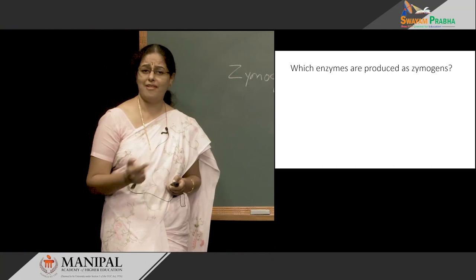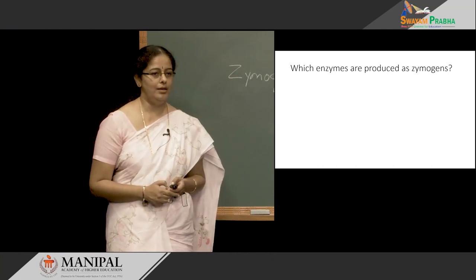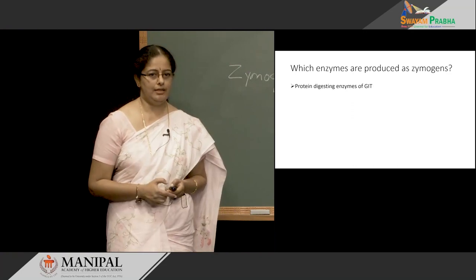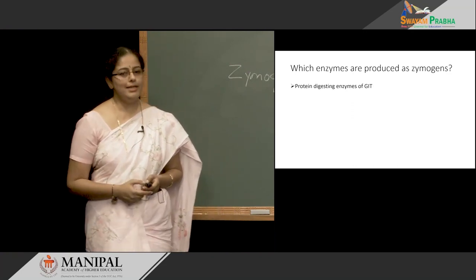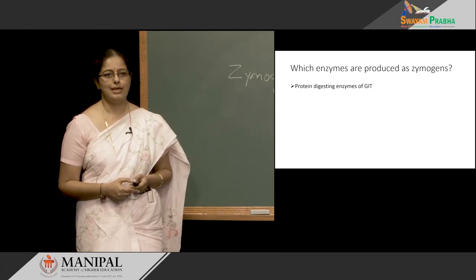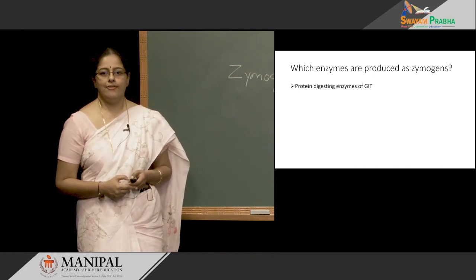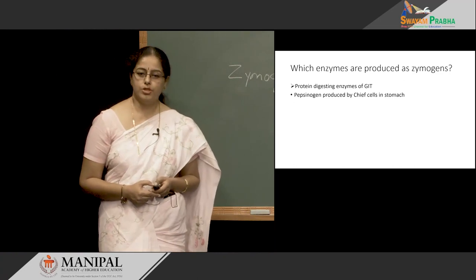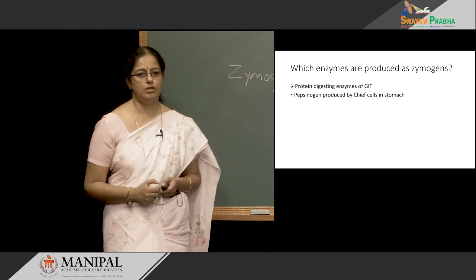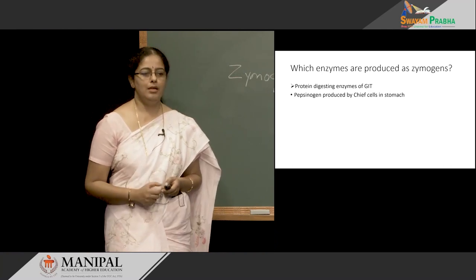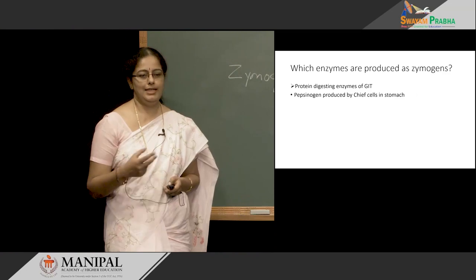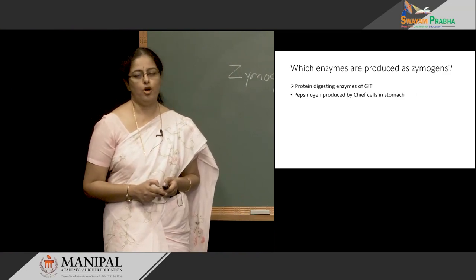There are several thousands of enzymes in the body, but only few are produced as Zymogens. Some of the protein digesting enzymes of the gastrointestinal tract are produced as Zymogens. Pepsinogen is produced by the chief cells in the stomach. They are synthesized and stored as Zymogen, that is in pepsinogen form. Once the pepsinogen is released into the lumen of the stomach, it gets activated to its active form called pepsin.